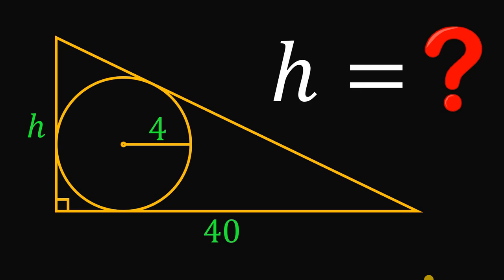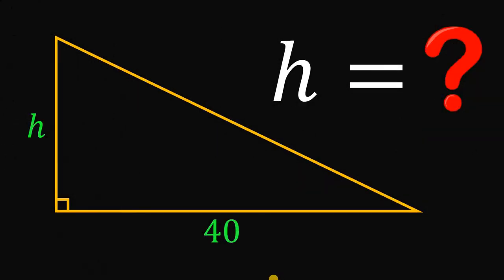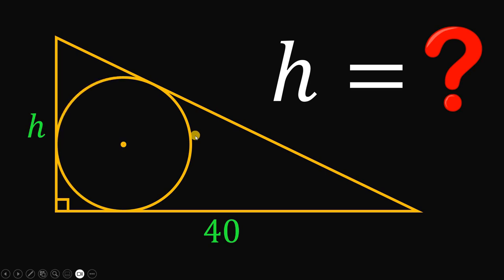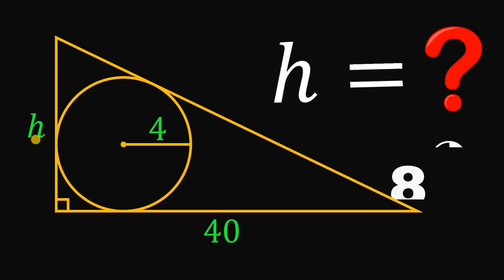Can you solve this geometry challenge? Given a right triangle with side lengths h and 40, draw a circle inside the triangle with radius equal to 4 units. The question is: what is the measure of the side length h? You can pause this video if you want to give this problem a try.